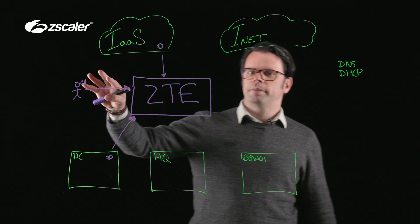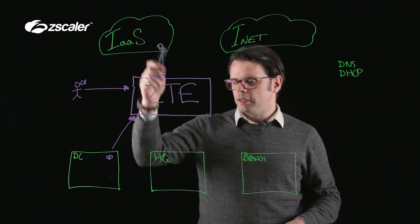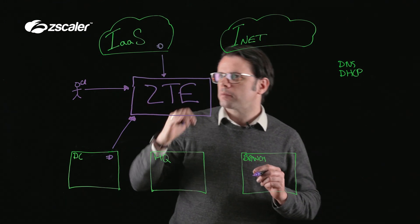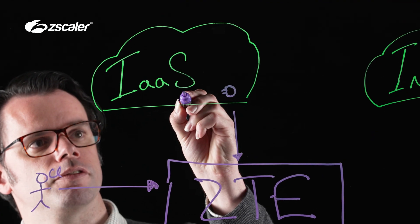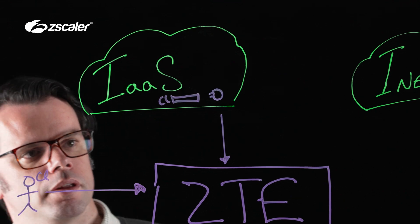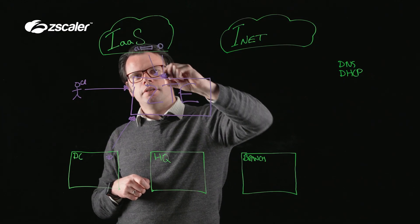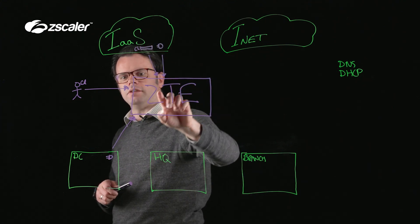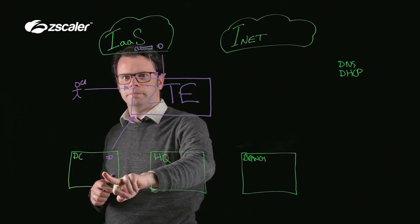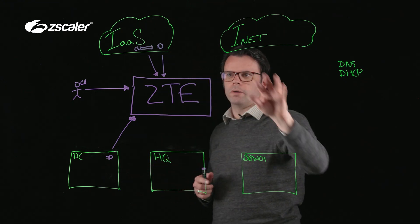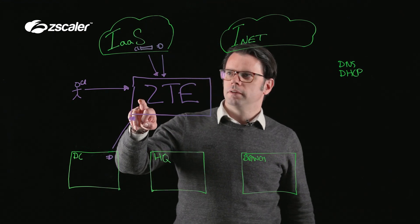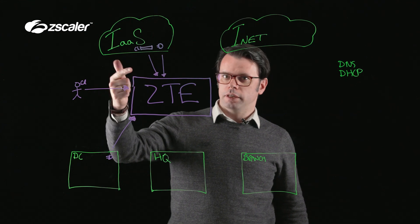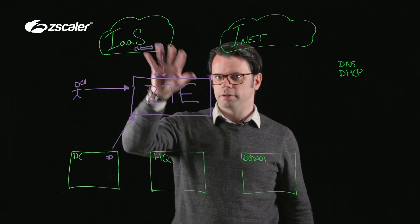From a client connector perspective, it's really easy to spin up and manage that access. When we think about providing an on-ramp for private application access, what we're doing is adding a connector into the IaaS infrastructure called a cloud connector. That cloud connector again makes an outbound connection to our cloud. The idea being that we can now on-ramp anything within our IaaS environment through the ZTE and out into the data center, for example. All I need to do is get the traffic to the connector, and the ZTE will figure out where it's going and whether it's allowed, based on the application segments within our environment.